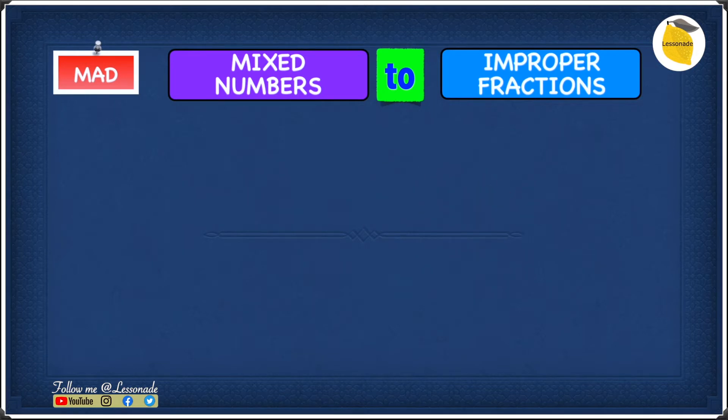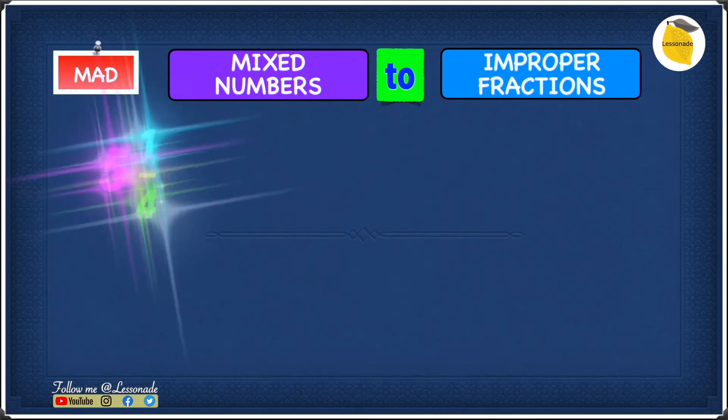Now, let's see how to convert mixed numbers into improper fractions using the technique MAD. So the first thing we're going to look at is the question, which is 5 and 1 over 4.